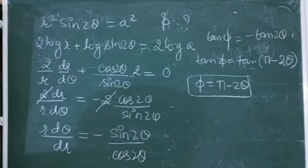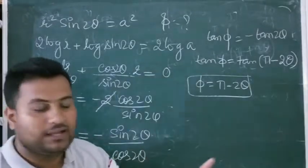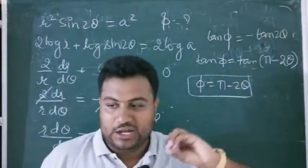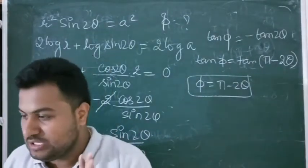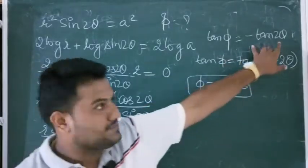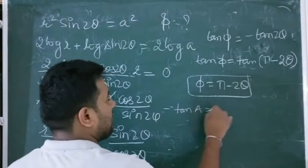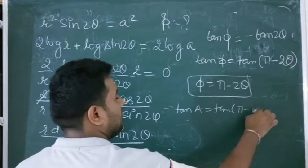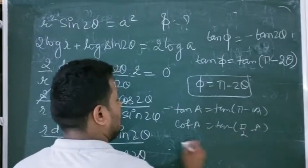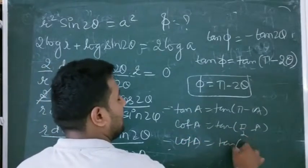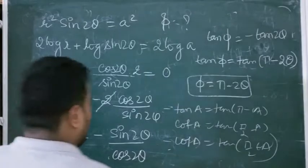So by taking log, differentiating, reciprocating, and converting into standard form, we can solve all types. Remember: if r·dθ/dr = tan(a), then φ = a; if it equals -tan(a), then φ = π - a; if it equals cot(a), then φ = π/2 + a.